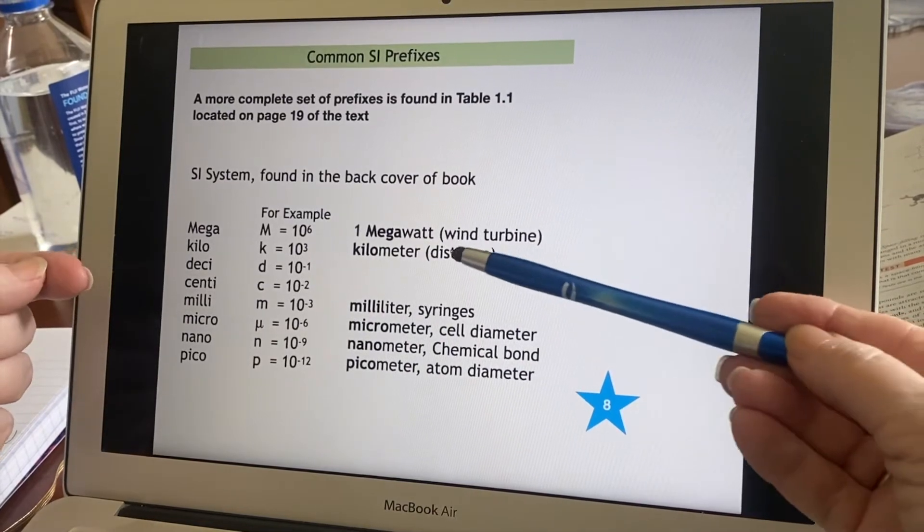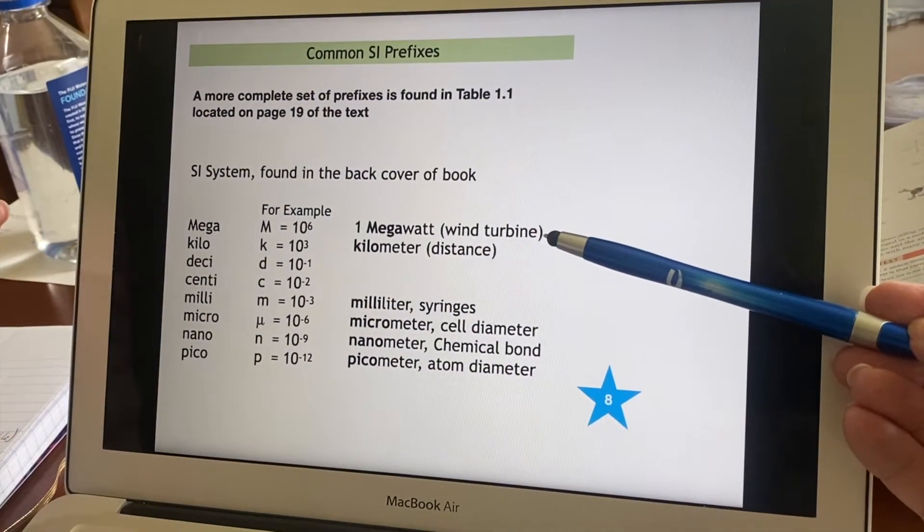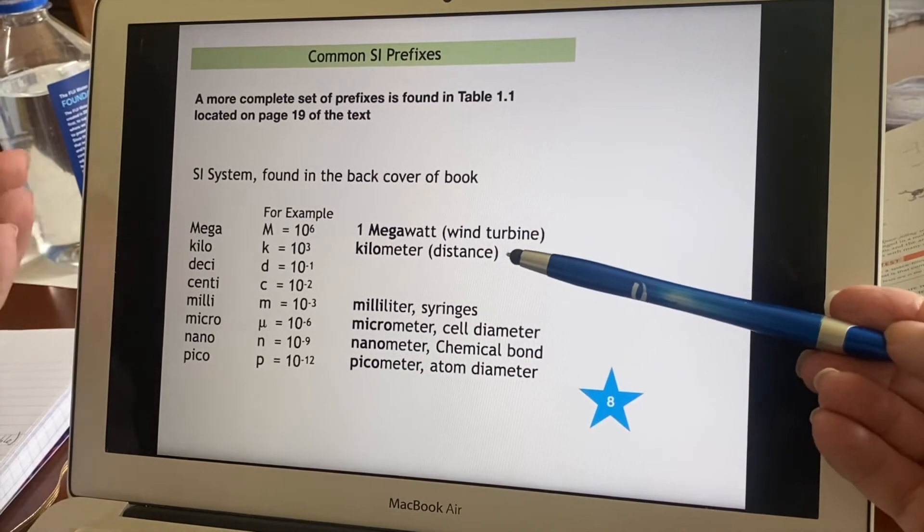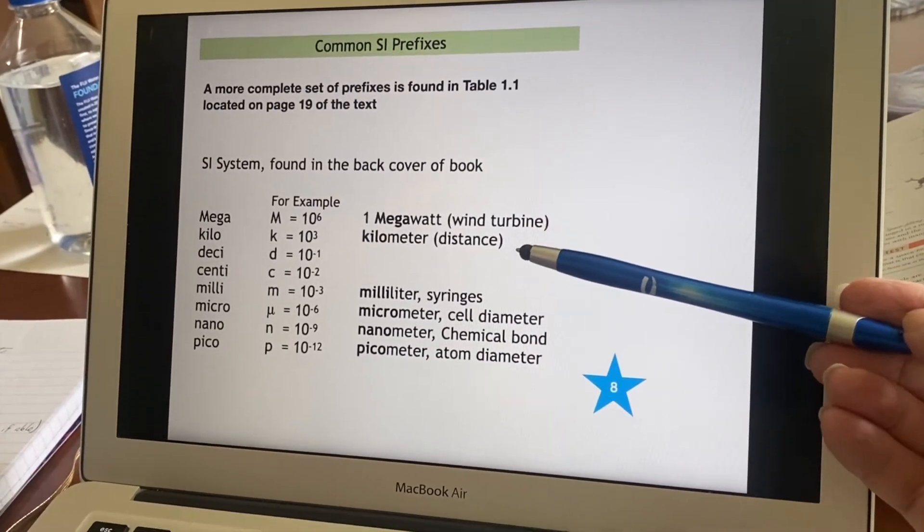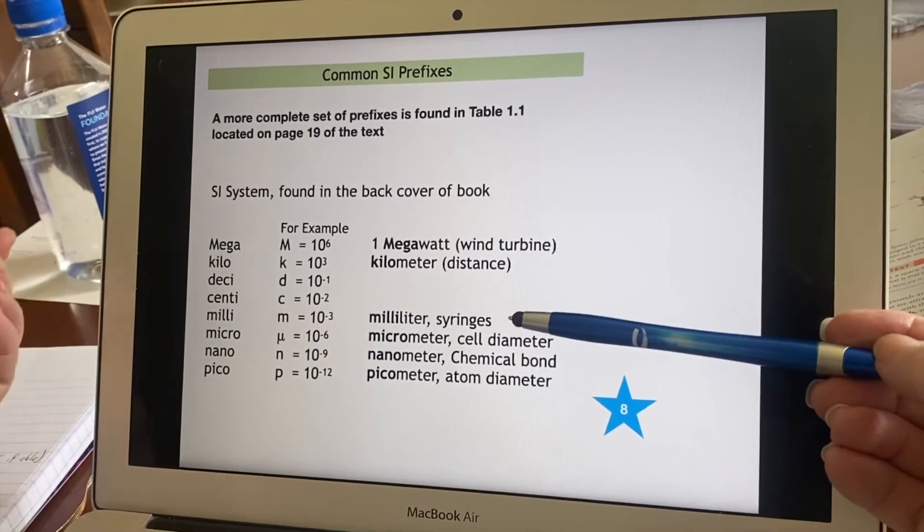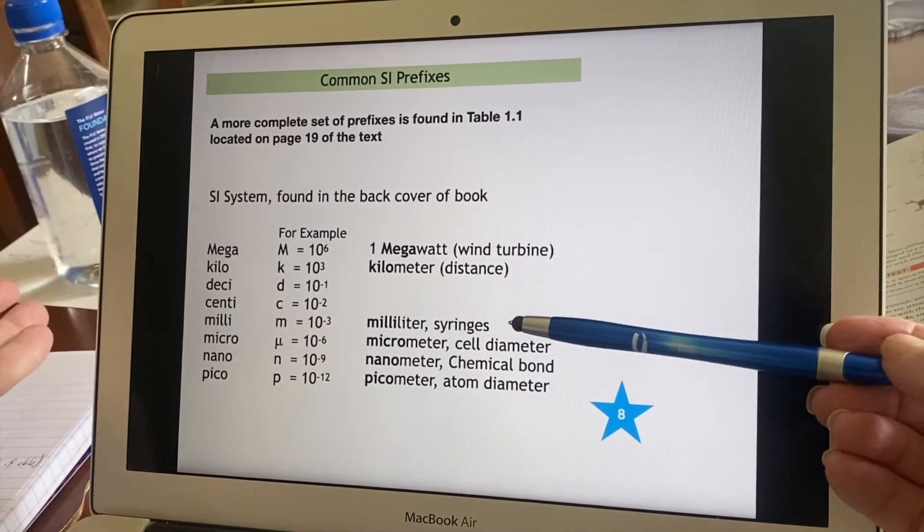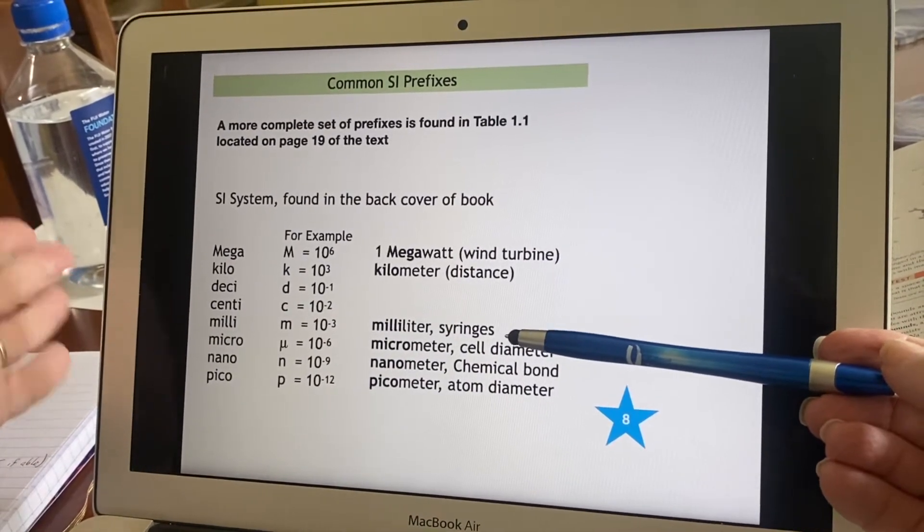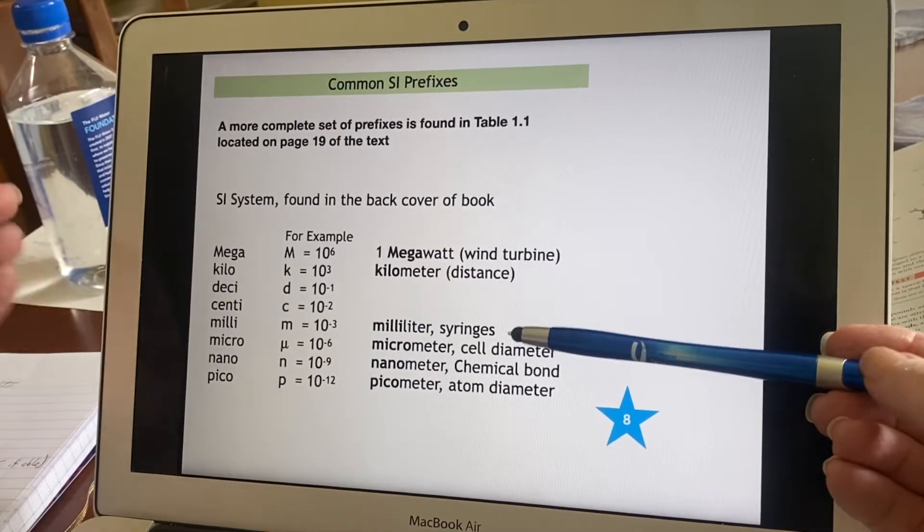A megawatt might refer to the amount of energy generated by a wind turbine. A kilometer is a distance we might use, but we're much more likely to use things like a milliliter. Where would you encounter a milliliter in real life? Well, that's the amount of something that might be delivered in a syringe. Milliliters.